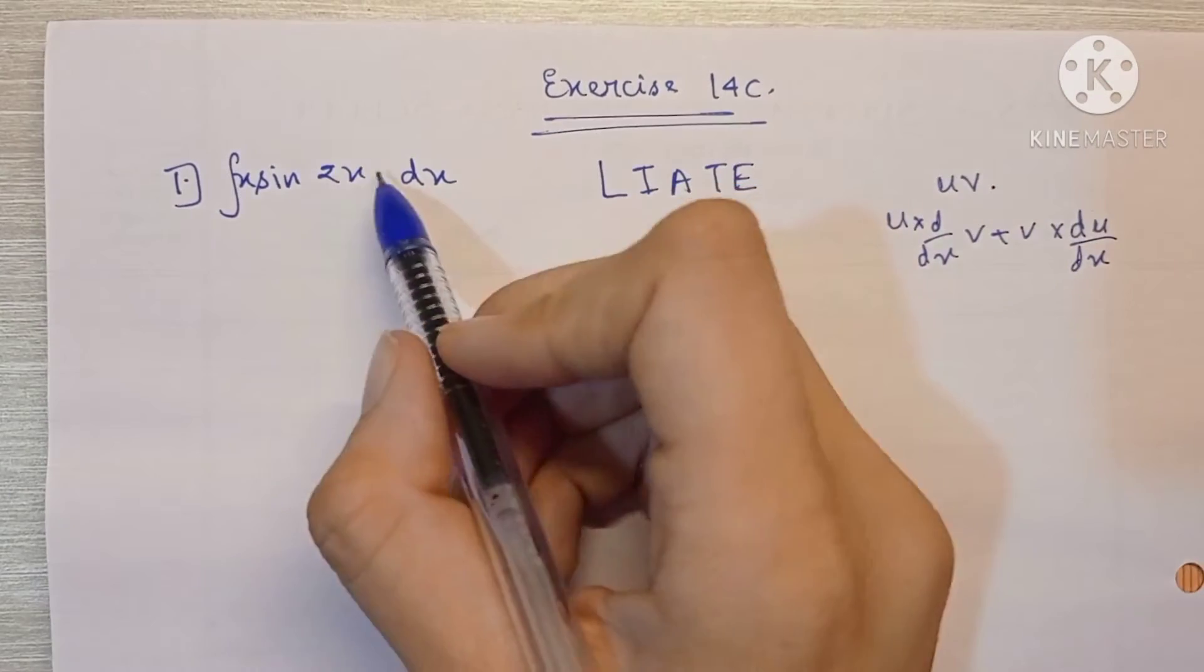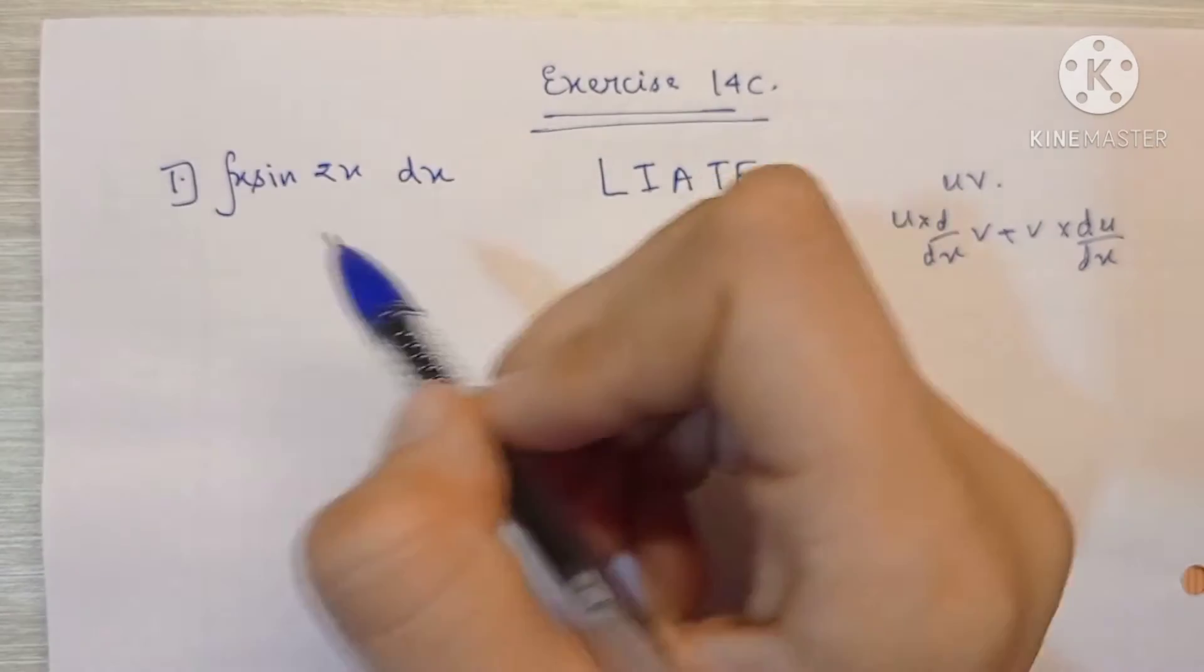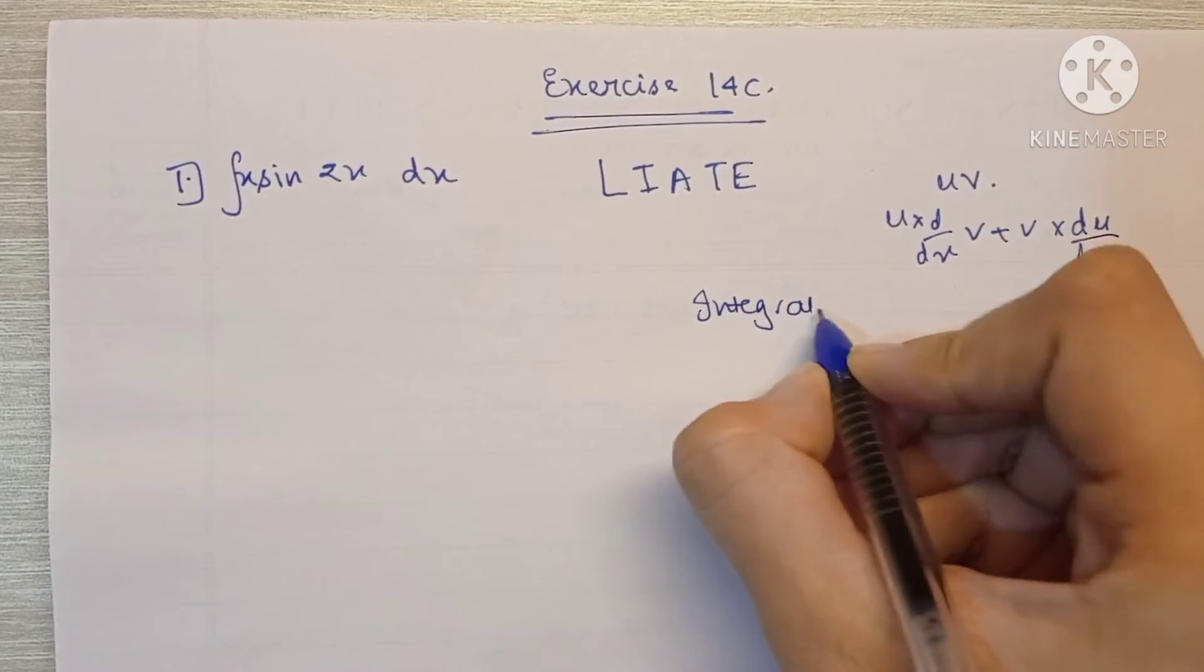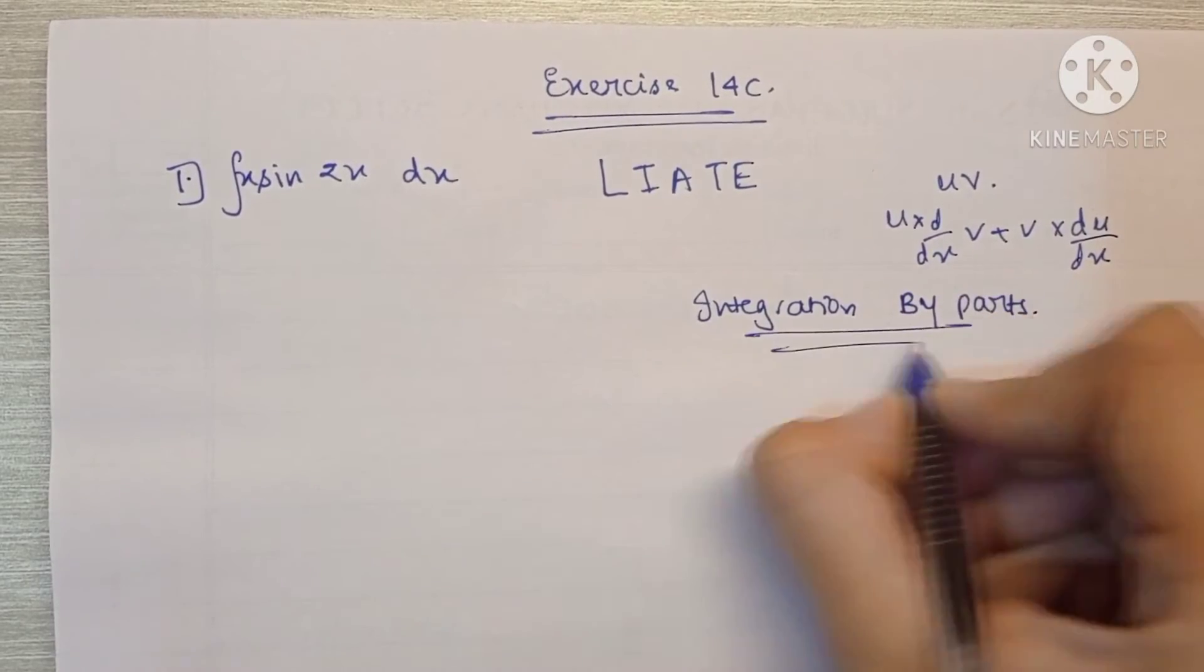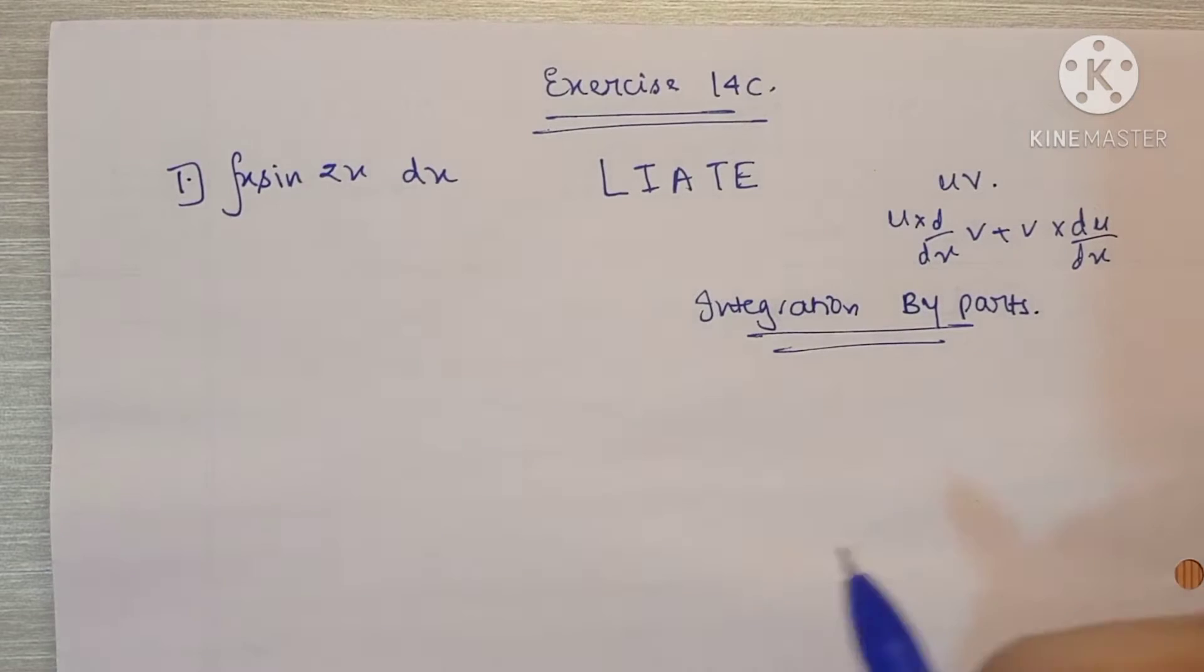But here the uv rule is not that simple and it's not called the uv rule, it's called integration by parts. So whenever I say we're going to do it by parts, it basically means we're going to do the uv rule of integration.